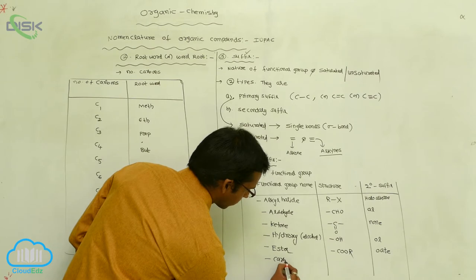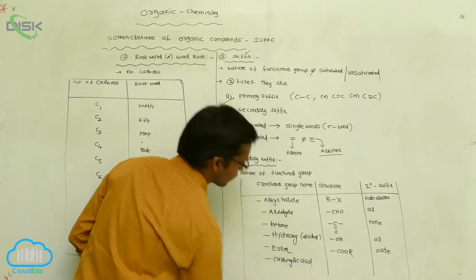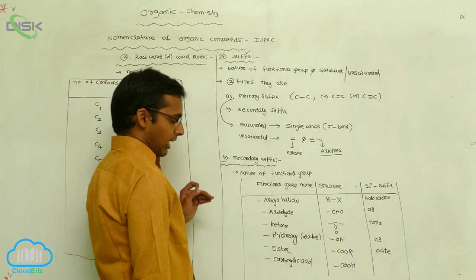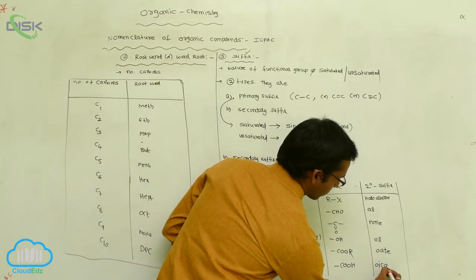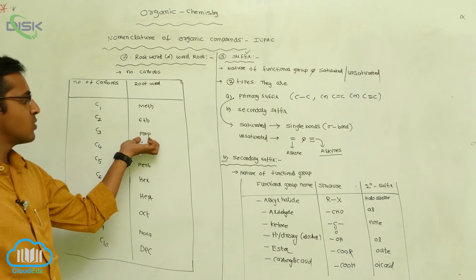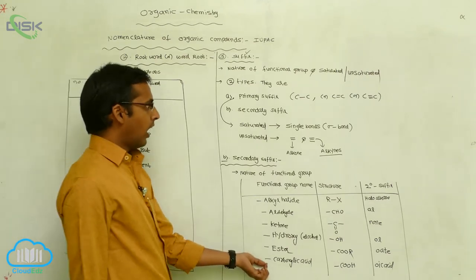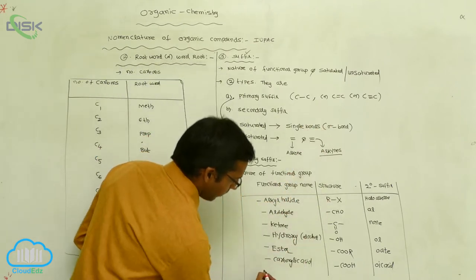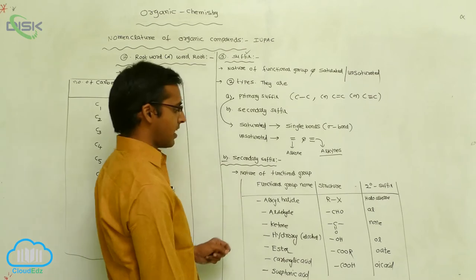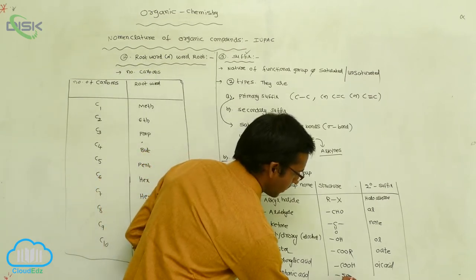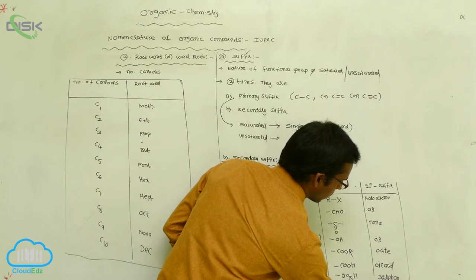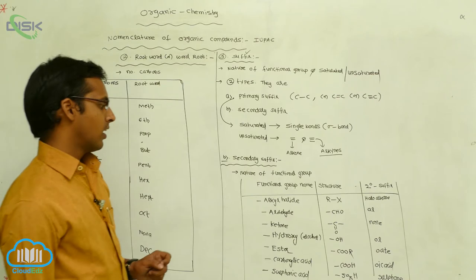If carboxylic acid is the functional group, its structure is –COOH, and its secondary suffix is 'oic acid'. So the names become methanoic acid, ethanoic acid, propanoic acid — the suffix is 'oic acid'. If sulfonic acid (–SO₃H) is the functional group, its secondary suffix is 'sulfonic acid'.